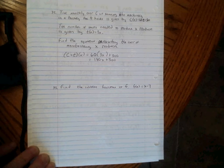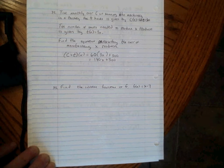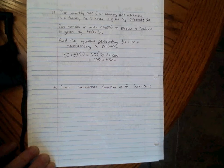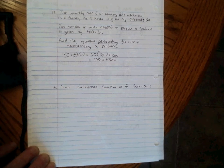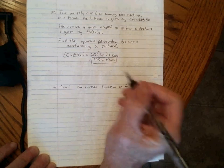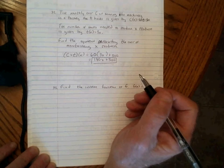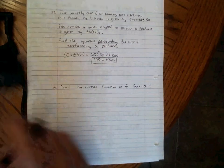That is not one of the answers on the final exam review, but that is the correct answer. That should be 180 times X plus 300. Alright, problem 33.